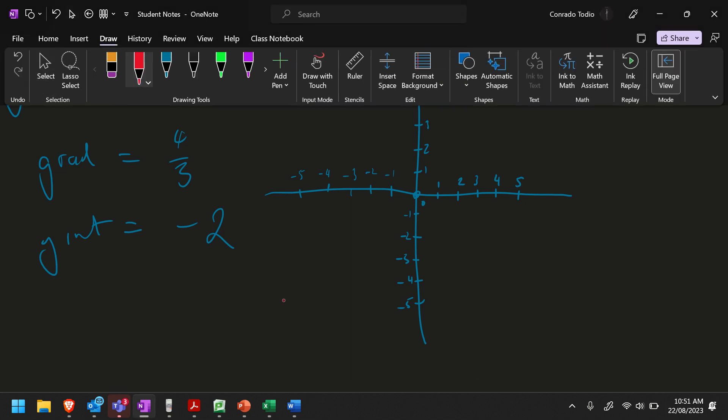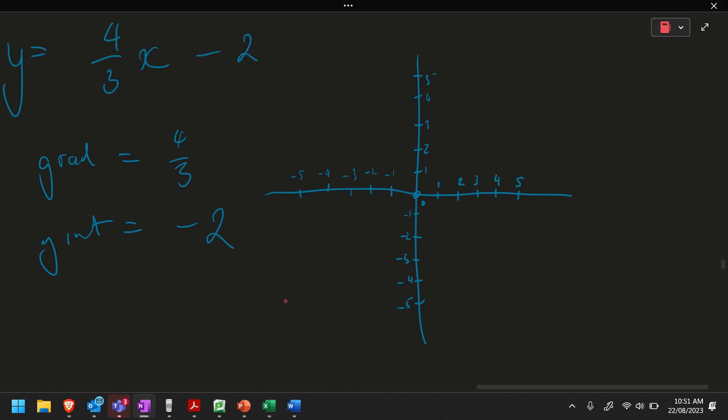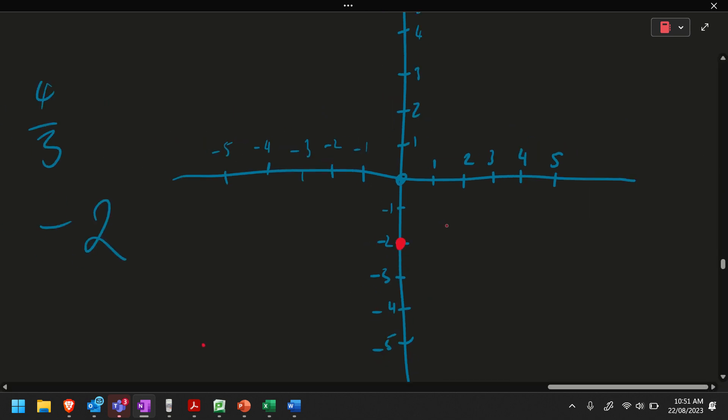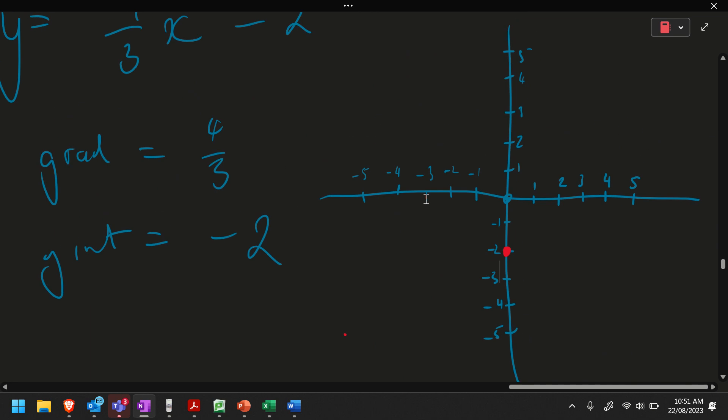Alright, the next thing is now I need to plot my 2 points. I can already find 1 point with the y-intercept, and it's negative 2. So on my y-axis, so this is your y-axis here, the line that goes up and down. Okay, it's negative 2. There's my first dot. My next dot is based off my gradient. Now, according to the gradient, we're going to go up 4 spaces, and then across 3. So from the dot, you go up 4. 1, 2, 3, 4, and then you go to the right 3 spaces. So 1, 2, 3.